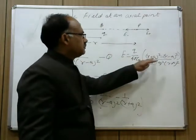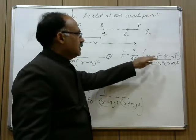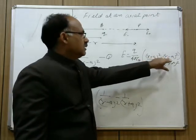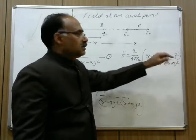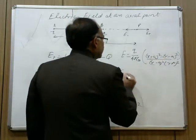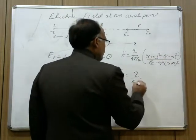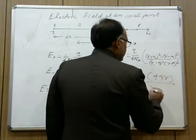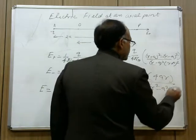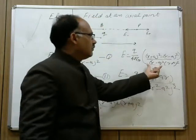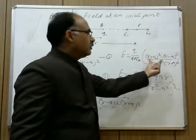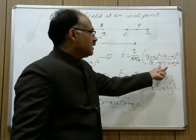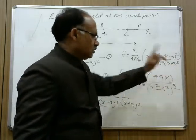Squaring the two terms: (r plus a) squared gives r squared plus a squared plus 2ar, and (r minus a) squared gives r squared plus a squared minus 2ar. Subtracting these gives 4ar in the numerator. So E equals q upon 4 pi epsilon naught times 4ar upon (r squared minus a squared) whole squared, since (r minus a)(r plus a) equals r squared minus a squared.